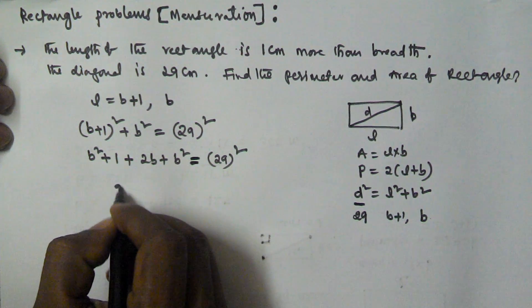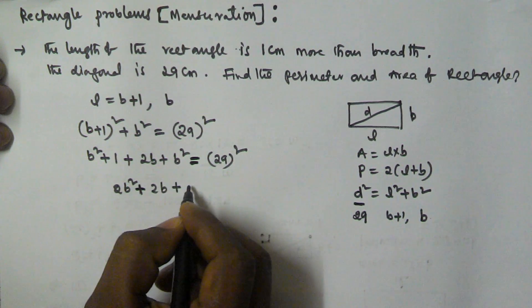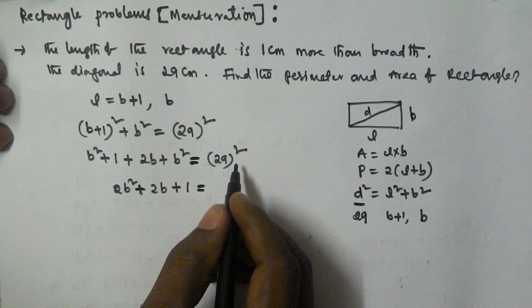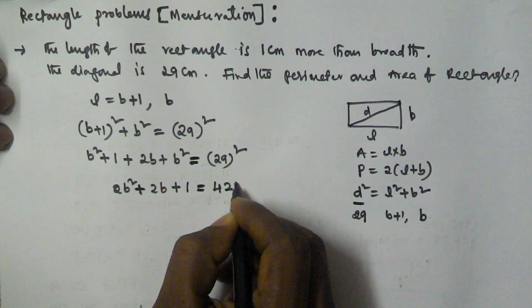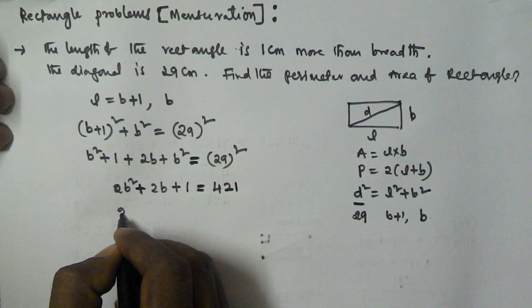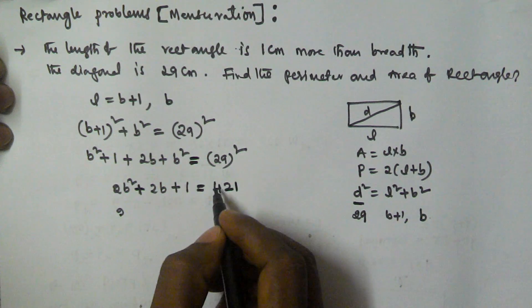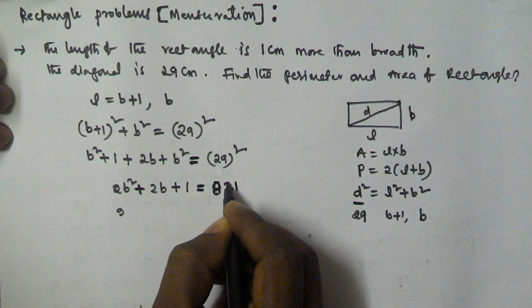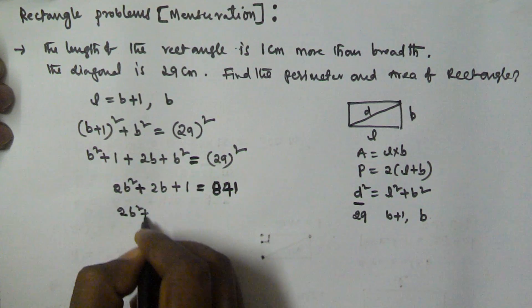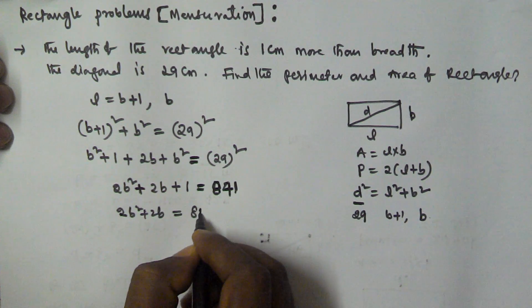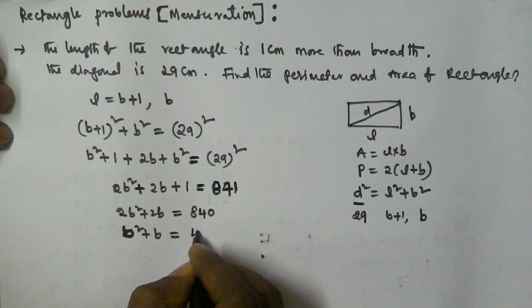Now, 29² is equal to 841. Expanding (b + 1)² + b² gives 2b² + 2b + 1 = 841, so 2b² + 2b = 840, and dividing by 2 gives b² + b = 420.